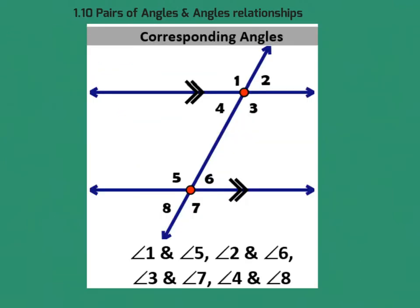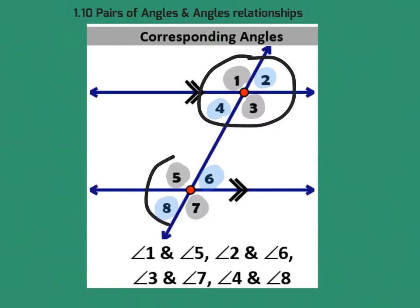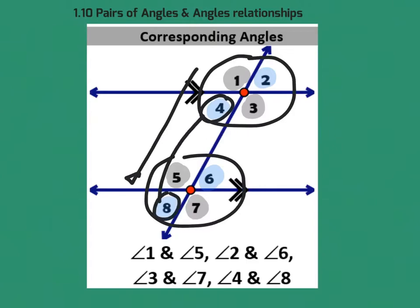To recap with a clean diagram: angles 1 and 5 are corresponding, and angles 3 and 7 are corresponding. Note that all four of those angles are equal — if 1 and 2 are vertical angles they're equal, and when slid down, 5 and 7 are equal as well. Similarly, 2 and 6 correspond, and 4 and 8 correspond.